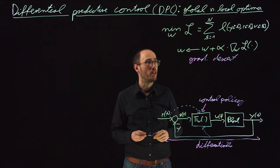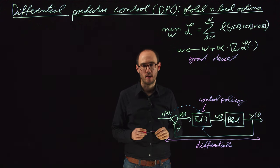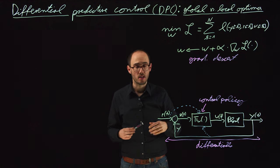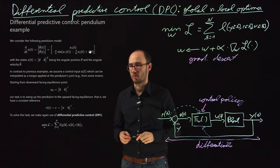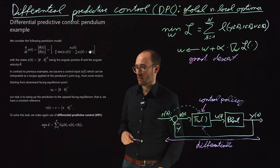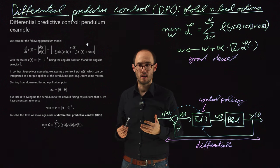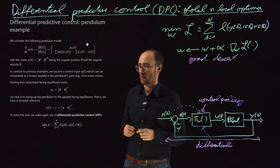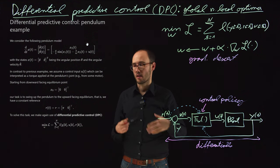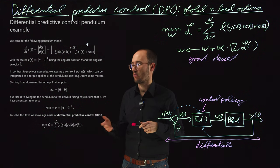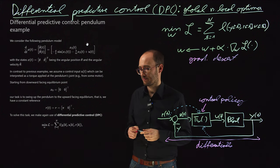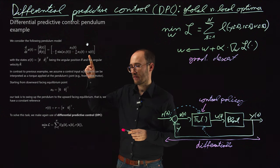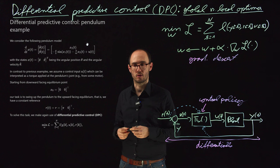That's why we need to talk about global versus local optima. To make this more concrete and lively, we will discuss it using a classical control engineering problem: the pendulum. We have already worked a lot with the pendulum in system identification. For differential predictive control, we now assume we have knowledge about the pendulum dynamics — and even if we first need to identify them from data, we already know different techniques to do that.